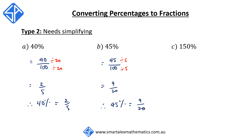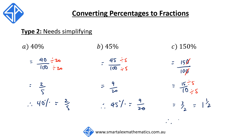For question C, we have 150%, which is the same as 150 over 100. We can start the cancellation by crossing off the 0, reducing it to 15 over 10. Continue to divide both top and bottom by the common factor of 5. This gives us 3 over 2, or 1 and a half, which is a mixed fraction. So therefore, 150% is the same as 1 and a half.